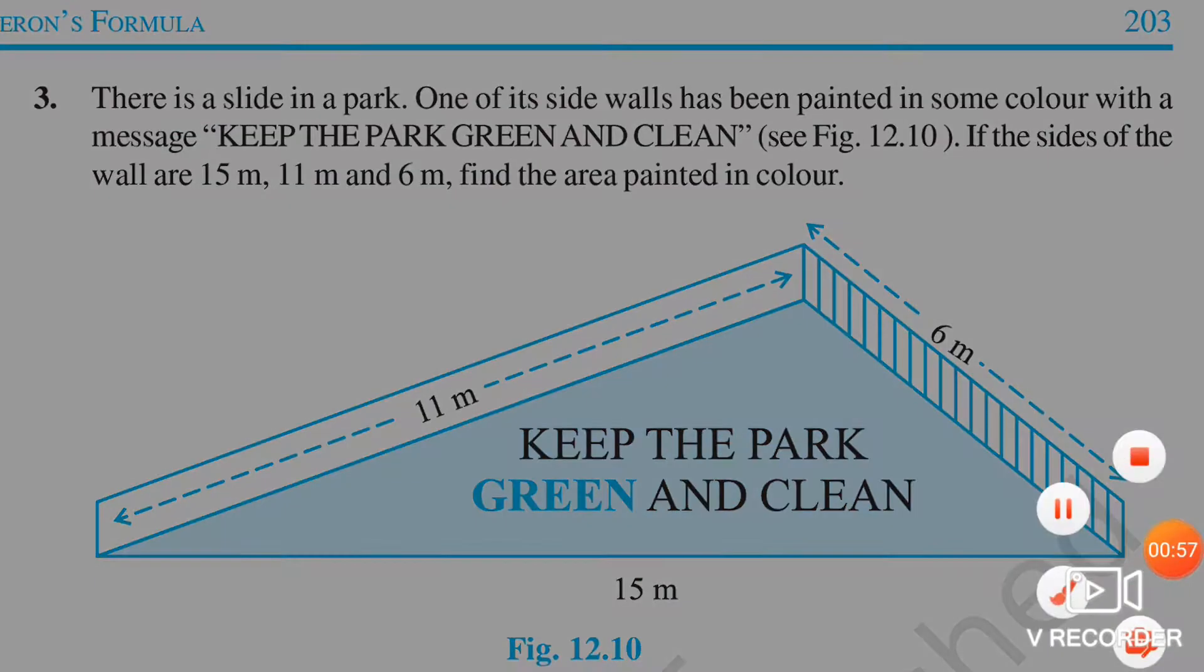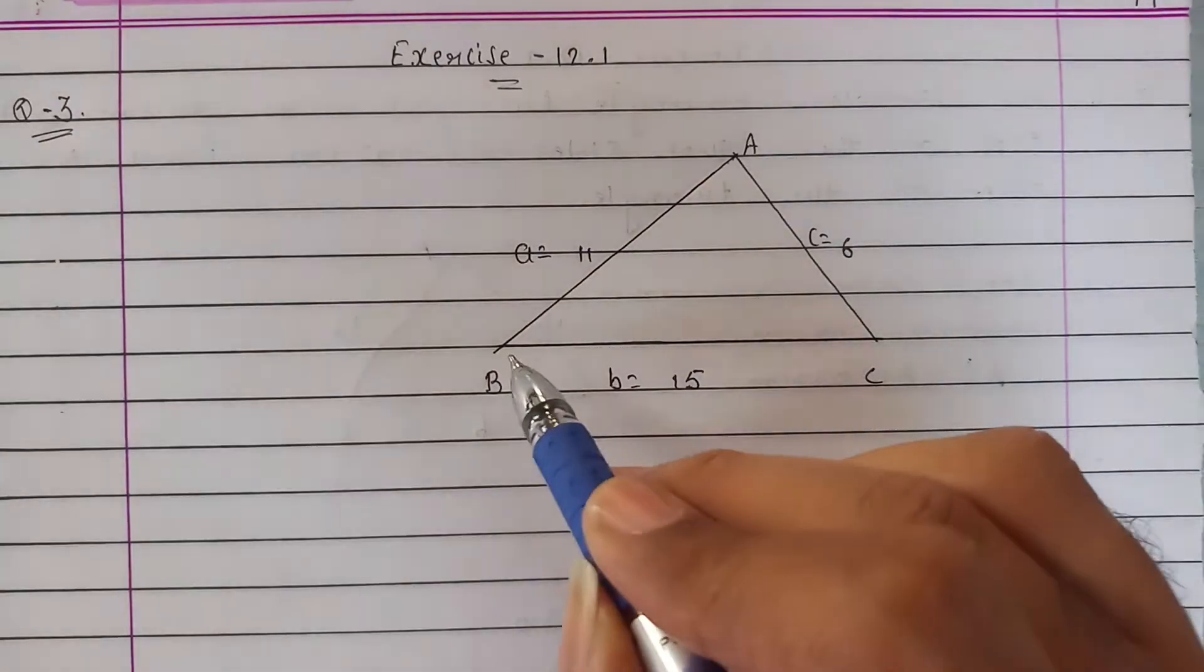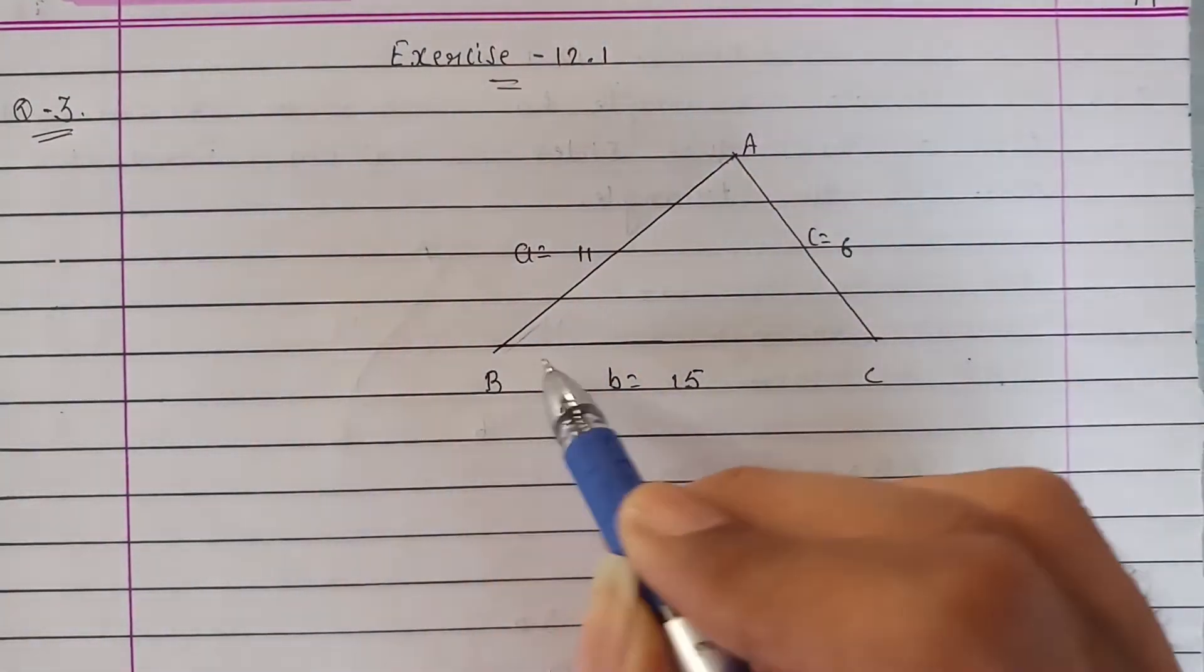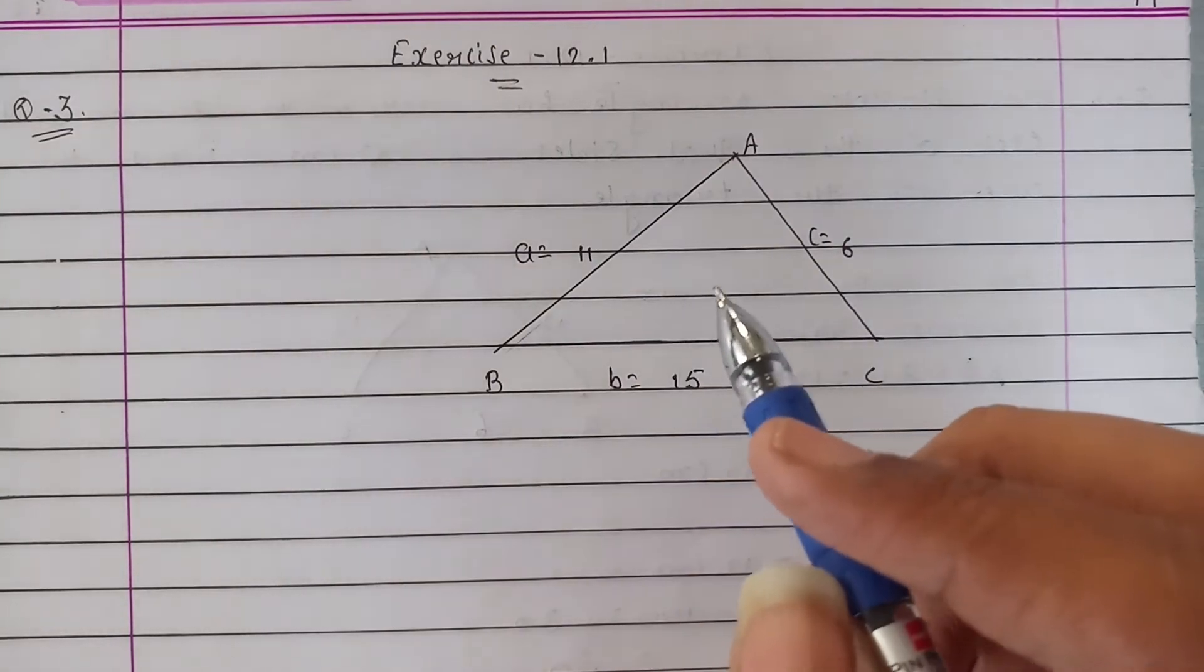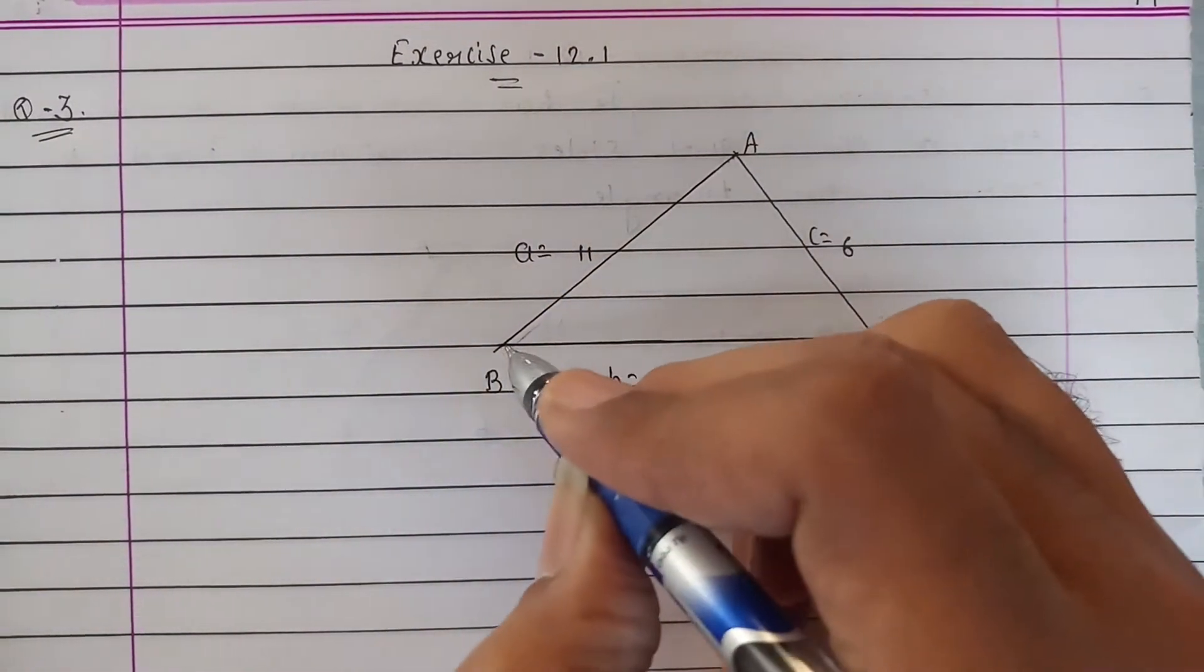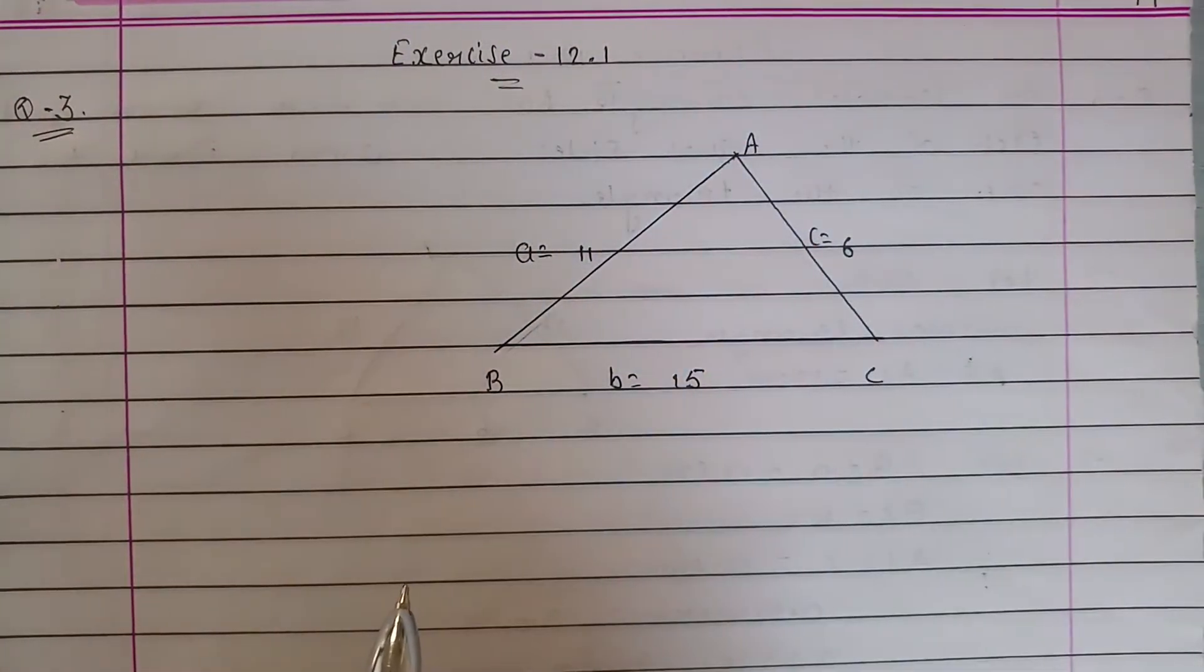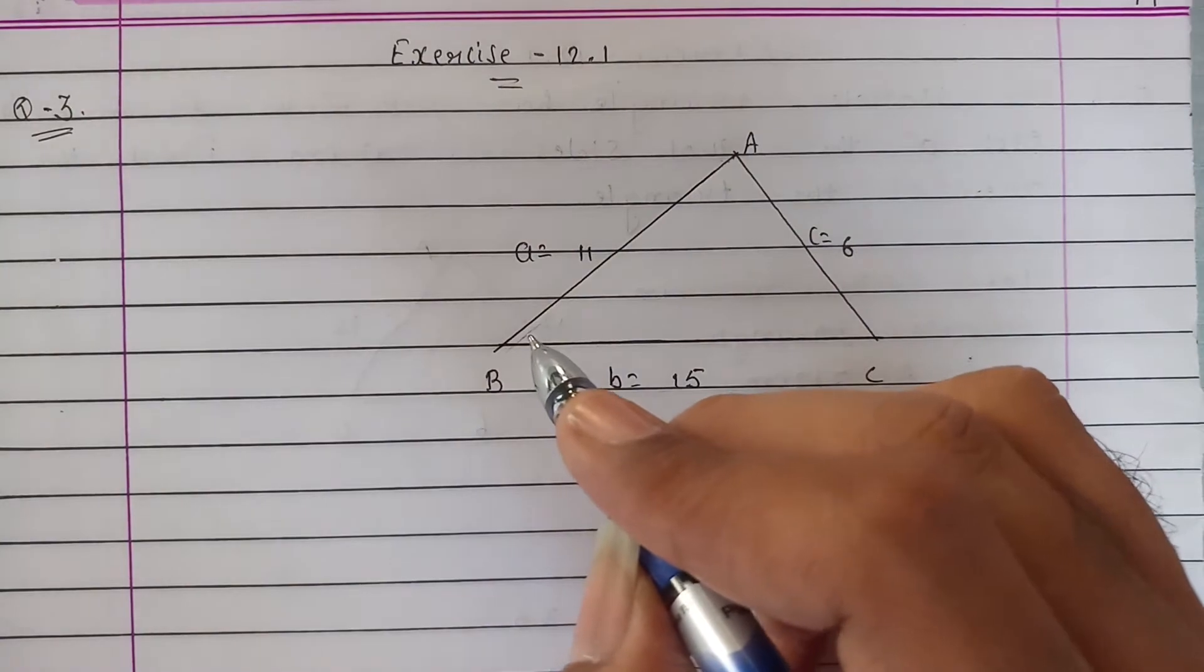So let us solve it. As we have seen in the question, we have given a triangular wall on which is written 'Keep the park green and clean.' The wall's lengths are 11, 15, and 6.